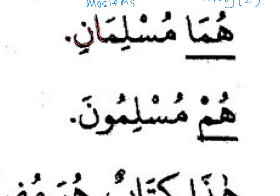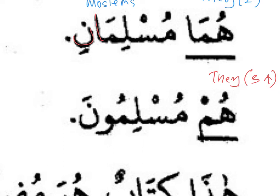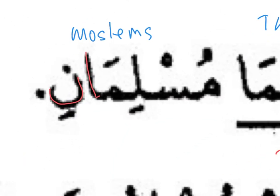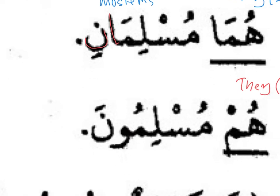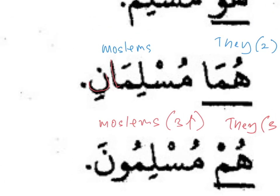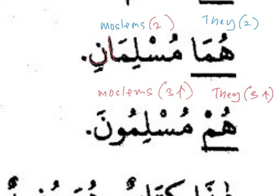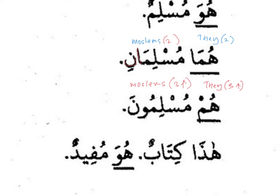The third sentence is similar to the first and second: 'hum muslimun.' Hum means 'they' and refers to three and above. These people are muslimun, which is the plural form — muslim (one), muslimani (two), muslimun (three and above). Since the word muslimun is also muzakkar, the correct Domir to use is hum — 'hum muslimun.'